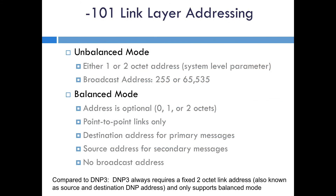There is link layer addressing similar to DNP, except there are a few differences with unbalanced versus balanced. There's a broadcast address for unbalanced, and it's important to point out that balanced mode only supports point-to-point links, and that it has a destination address for the primary and a source address for the secondary. You can configure how many octets to use in the addressing, versus DNP3 which always uses two octets.